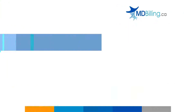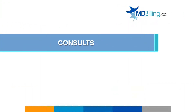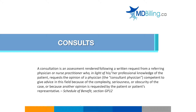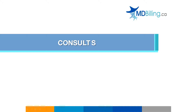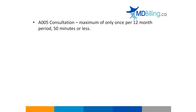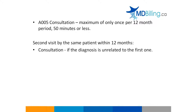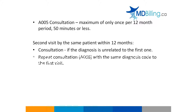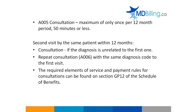The first visit with a patient is usually a consultation after the patient has been referred from another physician. The service code for consultation is A005 for a GP. Consultations are subject to limitations of one per 12-month period unless the patient is referred to you a second time with a clearly defined, unrelated diagnosis. In this case, the limit allowed is increased to two per 12-month period. Once the limit has been reached, a repeat consultation A006 can be billed for the second consult.